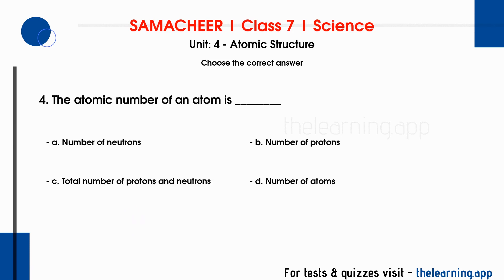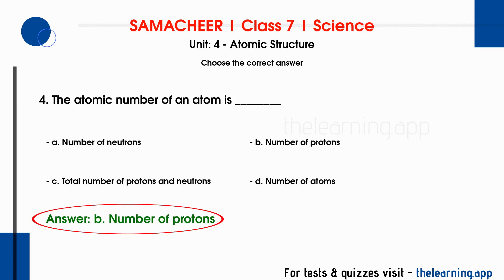Fourth question: the atomic number of an atom is dash. Options are: A) number of neutrons, B) number of protons, C) total number of protons and neutrons, D) number of atoms. Correct answer is option B, number of protons. The atomic number is the number of protons in an atom.